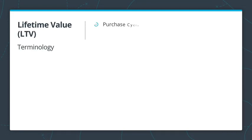First, purchase cycle is a time period that depicts the general frequency with which your products are purchased. At Udacity, if we start a new nanodegree class every two weeks, two weeks would be the purchase cycle.